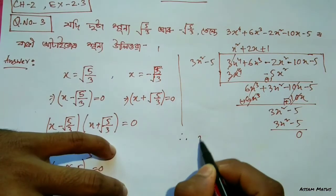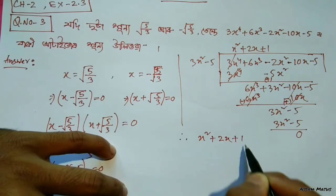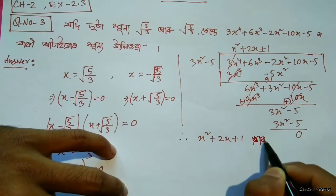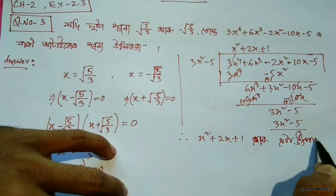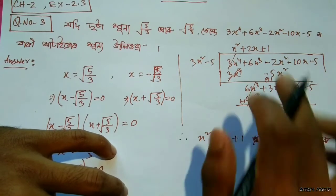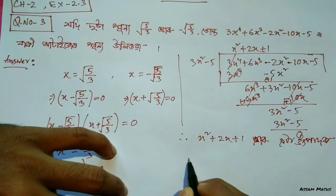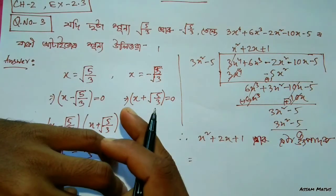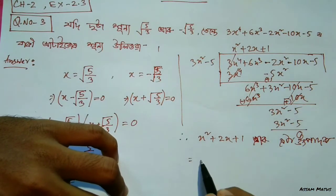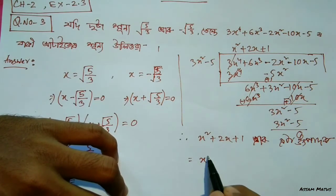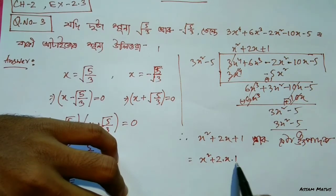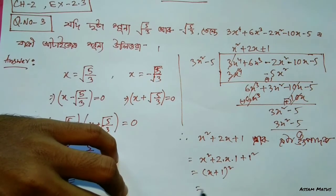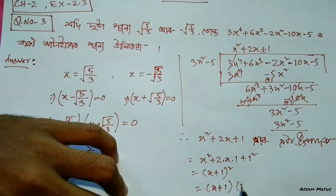X square plus 2x plus 1. X square, x square, x. X plus b squared, x plus one whole squared — x plus one, x plus one.